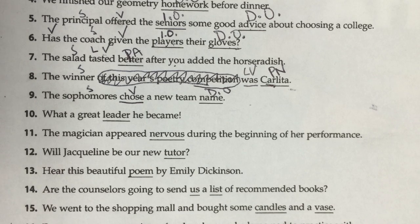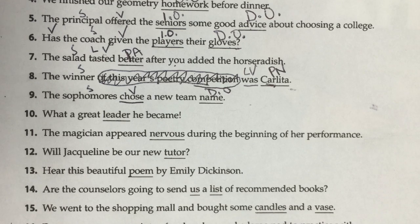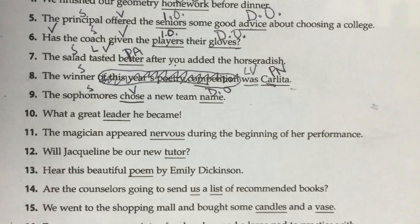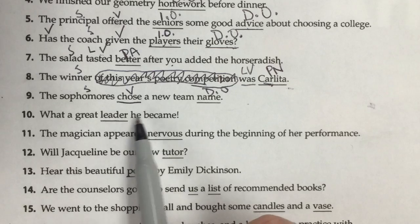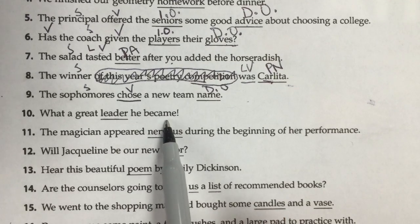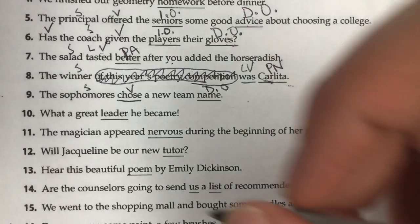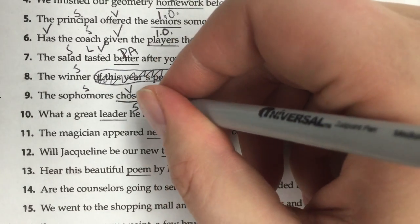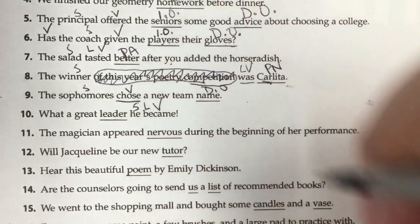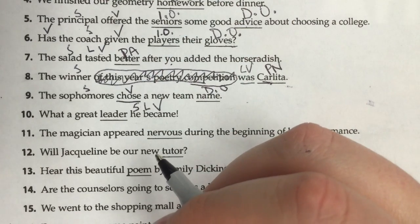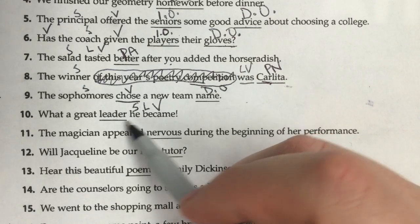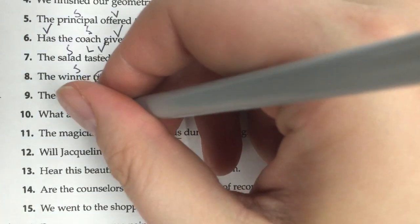Number ten: 'What a great leader he became.' This is another example of inverted syntax because the word order is upside down. When you have inverted syntax like this, rewrite the sentence in a more traditional format: 'He became a great leader.' He is our subject and became is our linking verb. Because became is a linking verb, we're looking for predicate nominatives and predicate adjectives. He became what? The answer is leader. Leader is a person, so this is a predicate nominative because it's a noun.